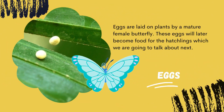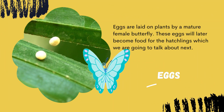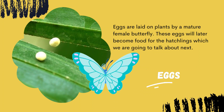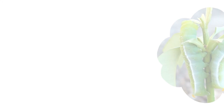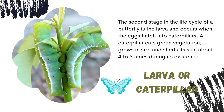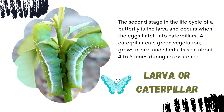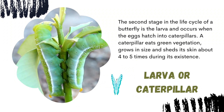Let's look at the first stage, which is the egg. Eggs are laid on plants by a mature female butterfly. These eggs will later become food for the hatchlings, which we are going to talk about next.